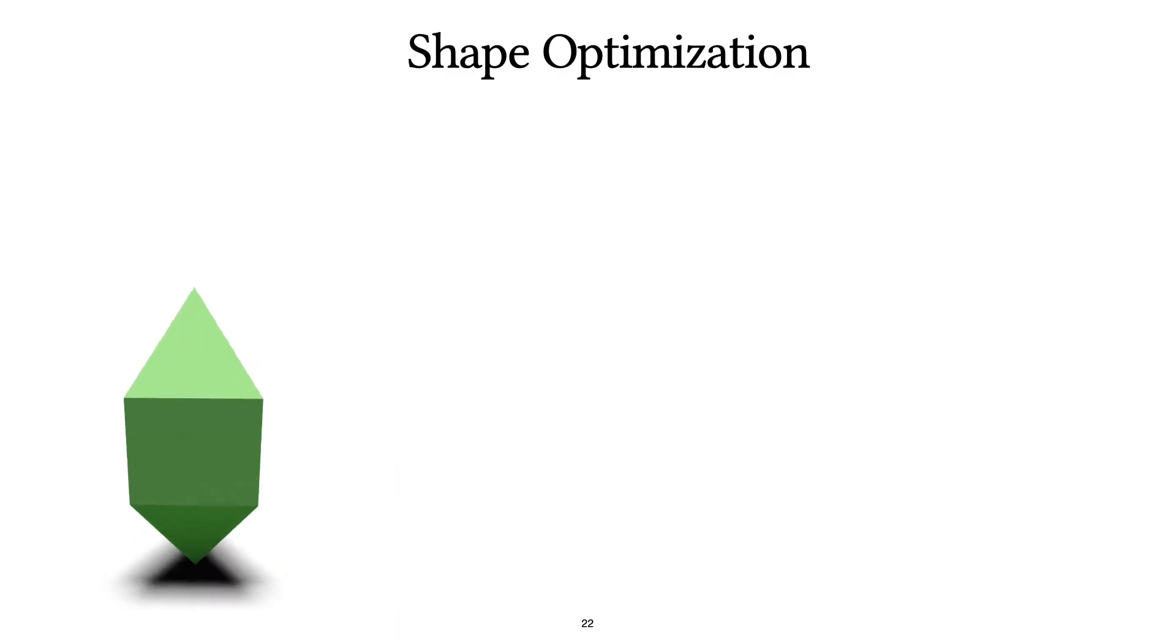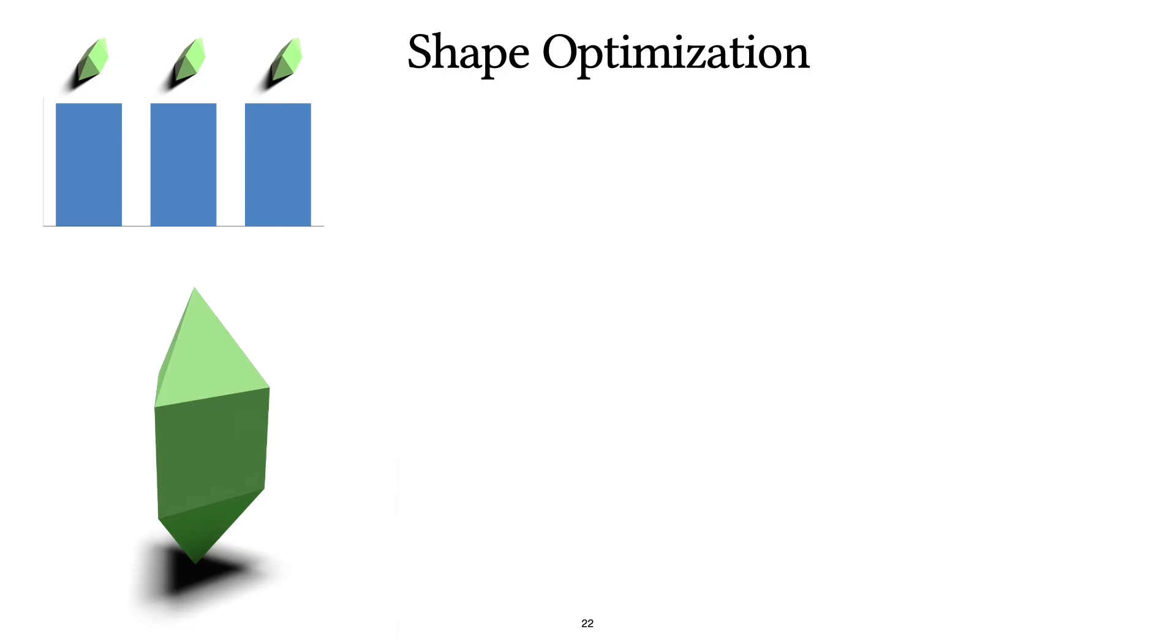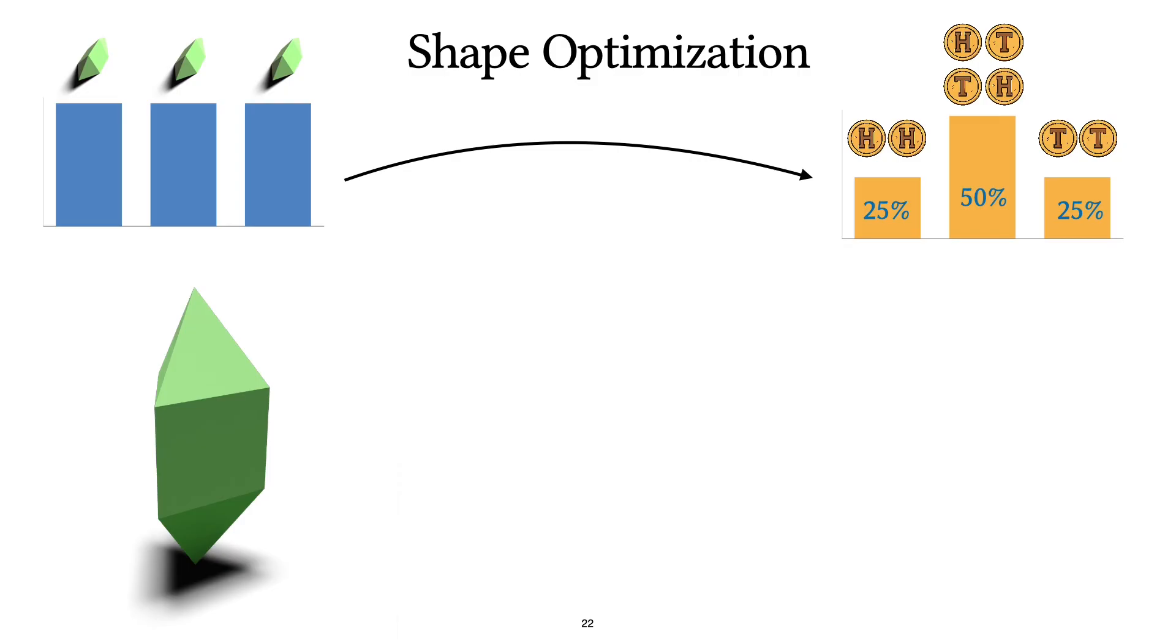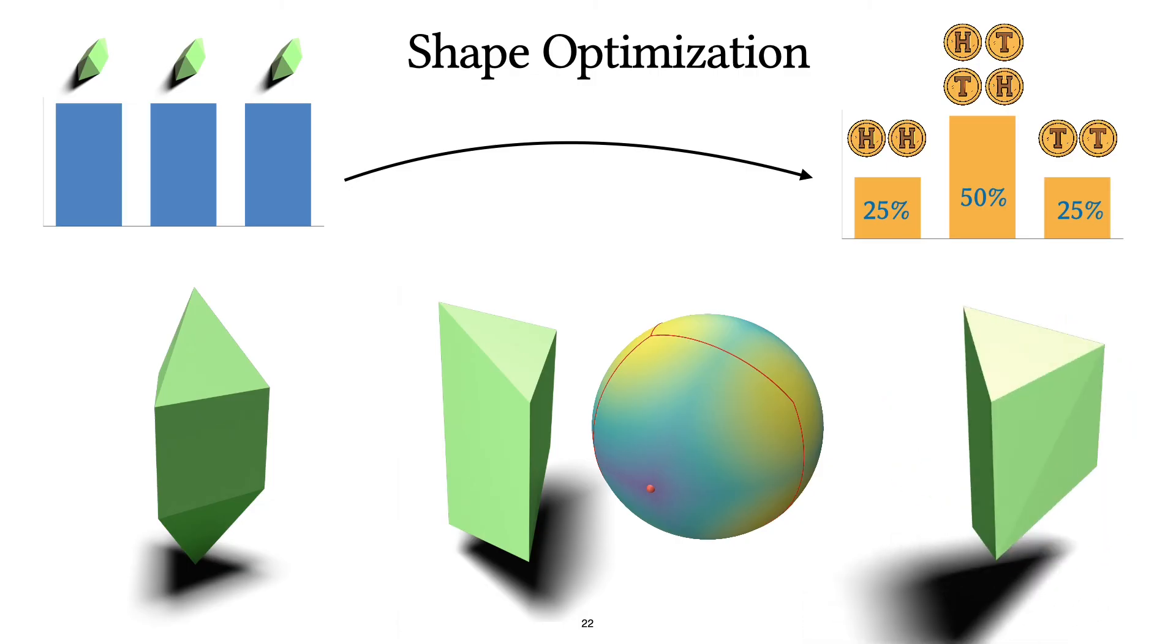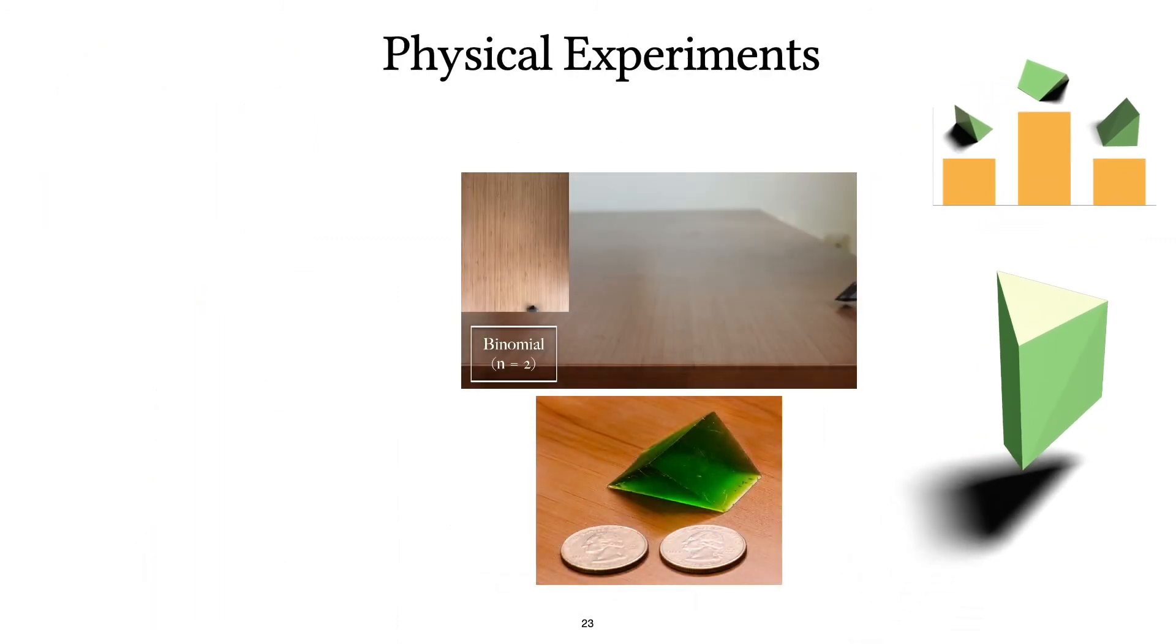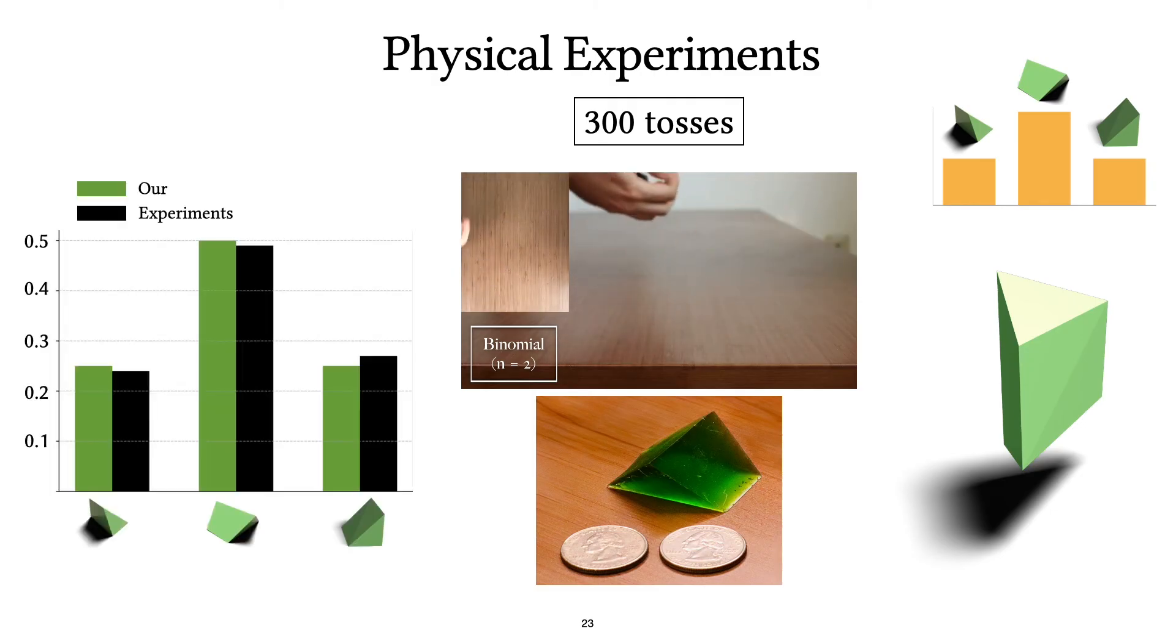For example, here we take this shape with three stable configurations, all with equal probabilities. And we want to turn it into a shape that has this distribution that is similar to a binomial distribution equivalent to two coin flips. After optimizing this shape, we end up with a shape that has exactly the probabilities that we want. We 3D print this shape and do physical experiments with it by tossing it on the ground 300 times. Even though our experiments have a lot of momentum and bounces, we can see that our estimated probabilities and the experiments are a pretty close match.